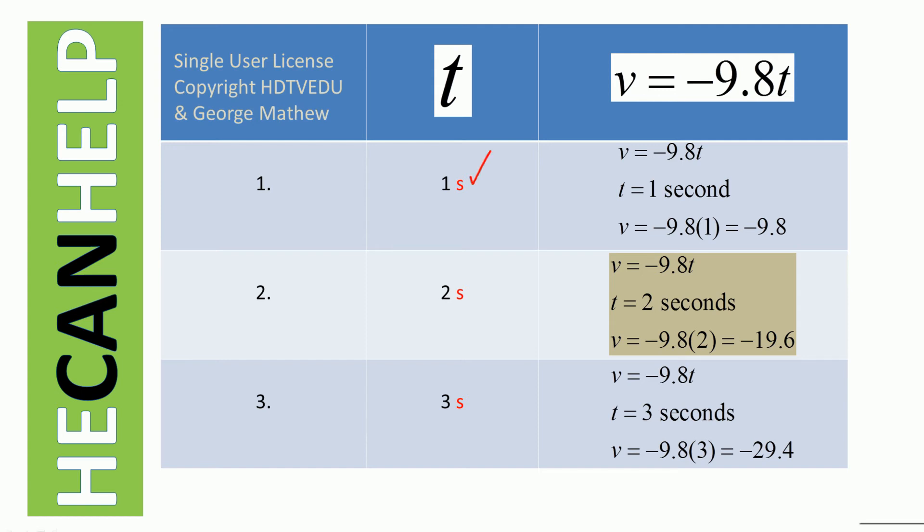Once we have v equals negative 9.8t, we substitute t equals one second, t equals two seconds, and t equals three seconds. Because v equals negative 9.8t and there is no t to the power of two term, no t squared term.